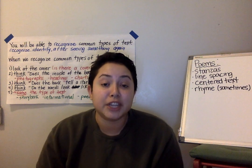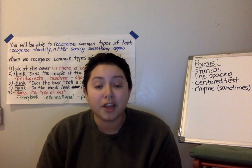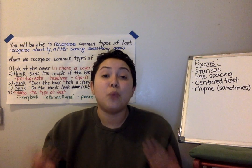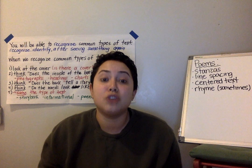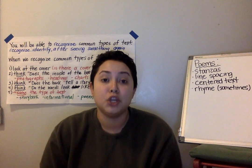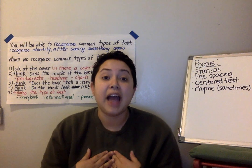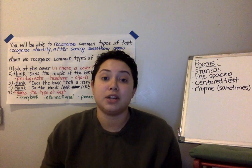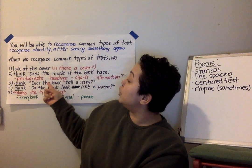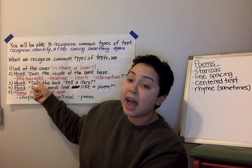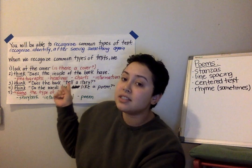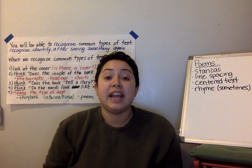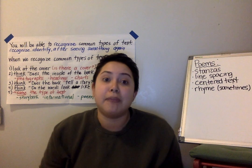You'll notice any illustrations, you'll notice whether or not there's an author or illustrator. Whether or not there is a cover is so important because sometimes when I see poems I notice that there's no cover — that they're not in any books. The next thing that you're going to do is you're going to look at photographs, headings, charts, and stuff like that to identify whether or not it's an informational text.